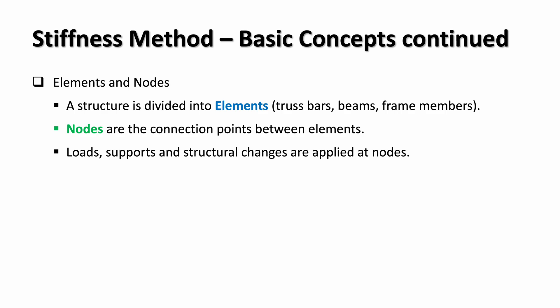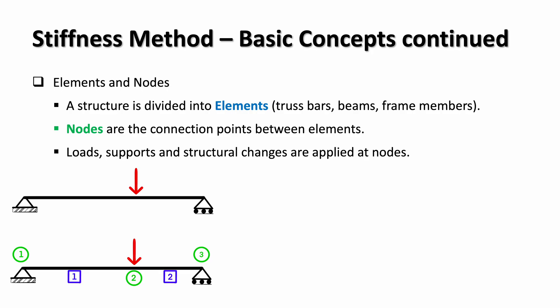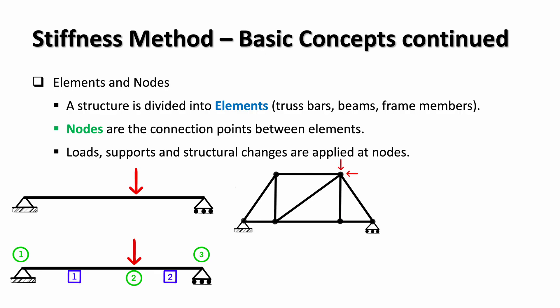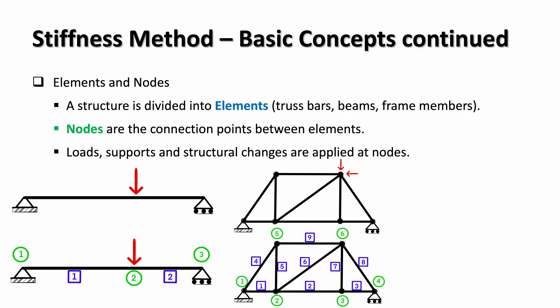Here we can see a simply supported beam with a point load. If I divide that into nodes and elements, you can see that this is two elements because I've had to add a node at that point of interest where there is a point load. In this truss, I will put a node at every hinge and the elements are between these nodes. In trusses, the loads are at the hinges and therefore there won't be a need to define any additional nodes based on loads in the middle of the bar. However, I might have to add additional nodes if there is a change in the cross-section properties or materials, like in this case here.